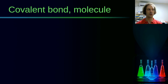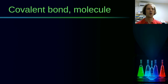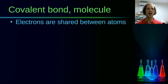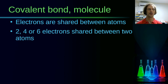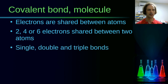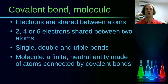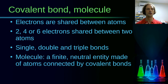Based on this, we can define the covalent bond. 'Covalent' means valent together — 'co' means together, as in coordinate or co-operation. So a covalent bond is when the valence electrons from multiple atoms are shared between each other. We can have two, four, or six electrons shared, called single, double, and triple bonds. A molecule can then be defined as a finite neutral entity made up of atoms connected by covalent bonds.